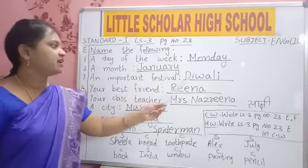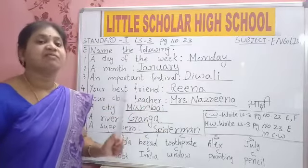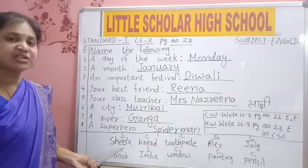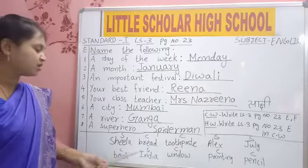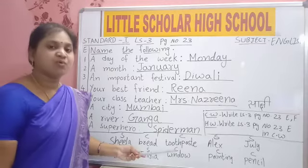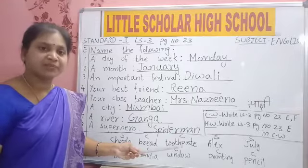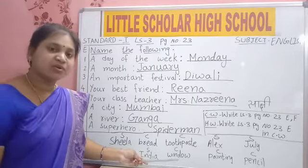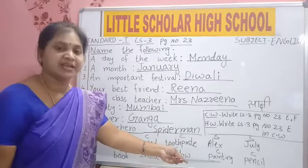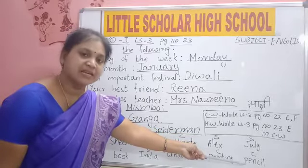All these — Monday, January, Diwali, Reena — all these names are starting with a capital letter. Why? Because they are all special names. Now read: Sheila, Book, Bread, India, Toothpaste, Window, Alex, Painting, July, Pencil. You should be able to read all these words, children.